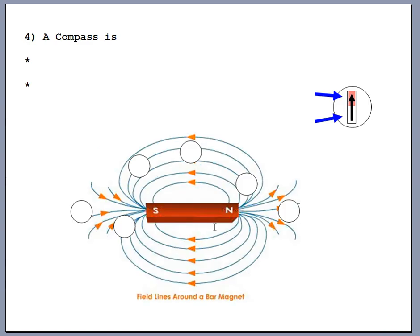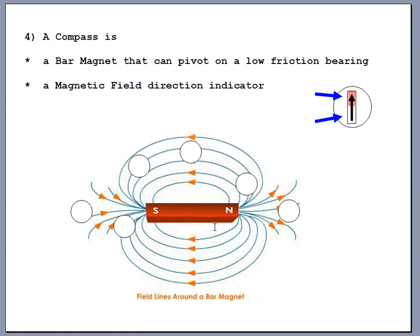We're going to be talking about compasses a lot. A compass is really nothing but a small bar magnet that can move on a low-friction bearing — it's balanced on a little needle bearing and can spin around freely, with a north end and a south end. Think of compasses not as a device to help you find your way in the forest, but as a way to figure out which direction a magnetic field is going in an area. The painted end of a compass is the north end, and we draw an arrow pointing toward the north end.